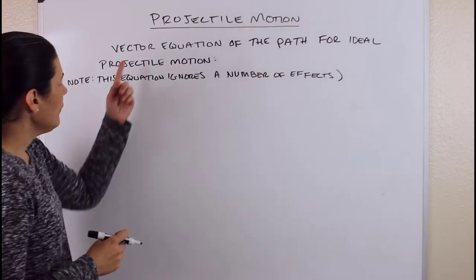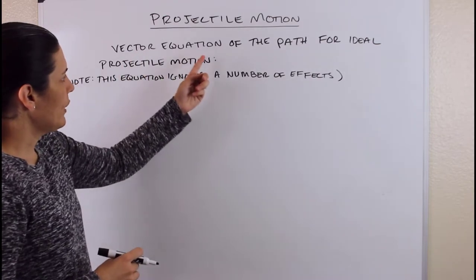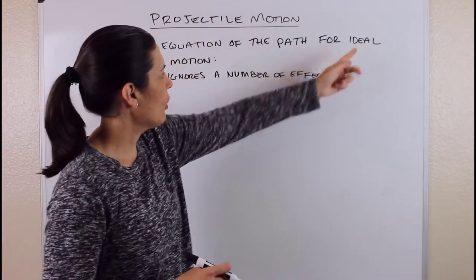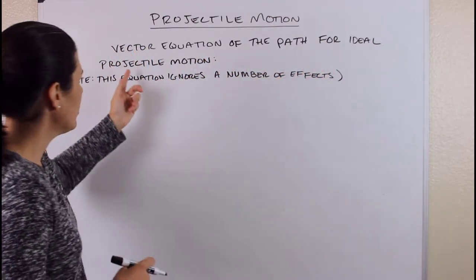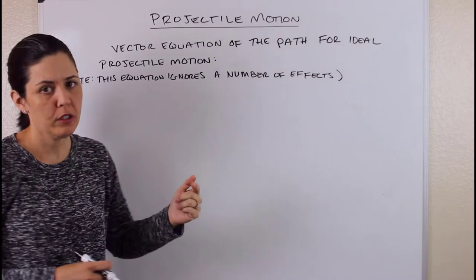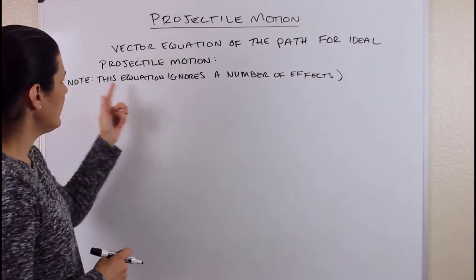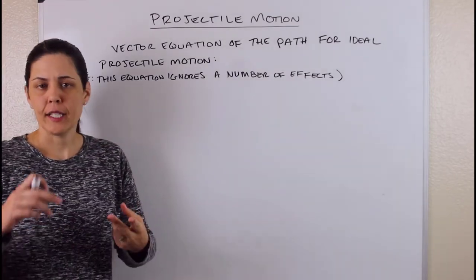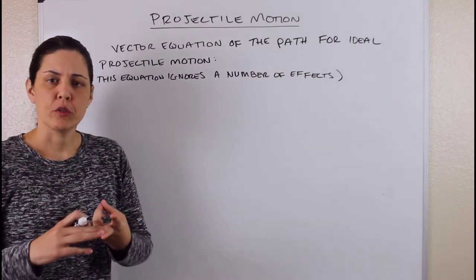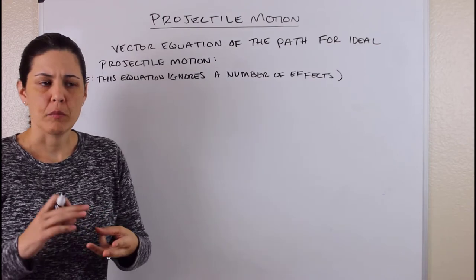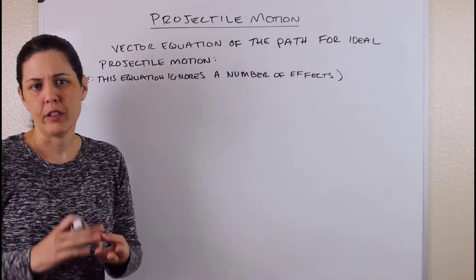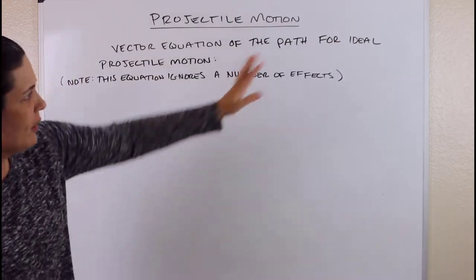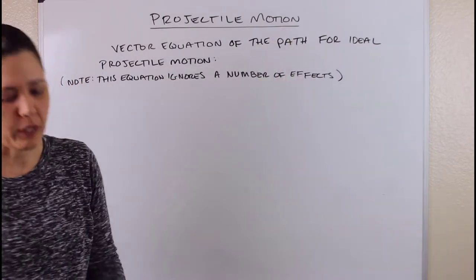I'm going to give you the vector equation of the path for ideal projectile motion. Just a note here: this equation ignores a number of effects like frictional drag and turning of the earth and things like that, so it's sort of an ideal situation.